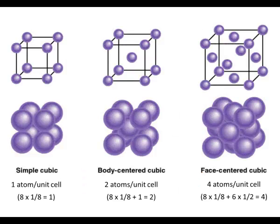In a simple cubic cell, there is one atom per unit cell. Eighth of an atom in each corner times eight corners makes one atom.